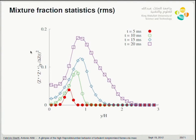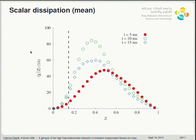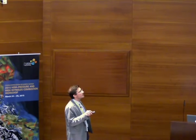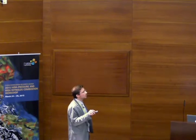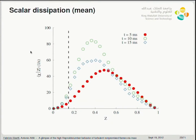The mean scalar dissipation rate conditioned on mixture fraction starts close to the initial laminar solution at 5 ms. The vertical line indicates the stoichiometric contour. As time progresses, the scalar dissipation rate increases, then decreases slightly and settles at 20 ms with the peak shifted towards lower mixture fraction values. The value at stoichiometry never really exceeds about 25 on the mean, which should be contrasted with the extinction strain of about 250 — confirming this is a healthy burning flame in the high Damköhler number limit.